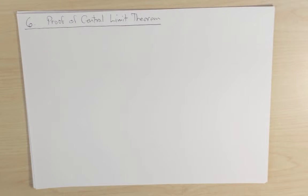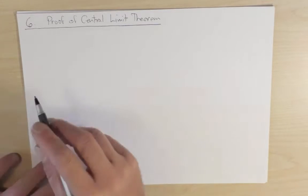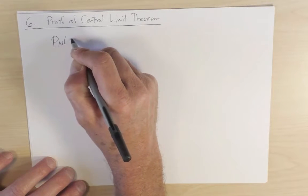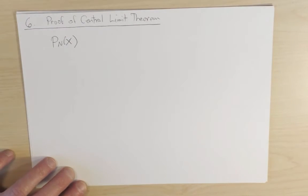Let me now outline a proof of the central limit theorem. This proof starts with the evolution equation of the probability distribution itself after a single step. Let me write P_n of x. What is the probability that after n steps I'm at position x? How can this happen?